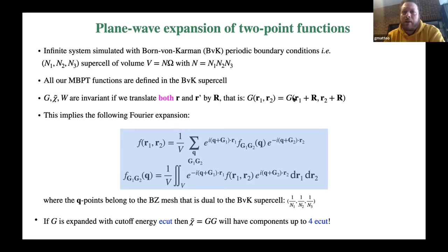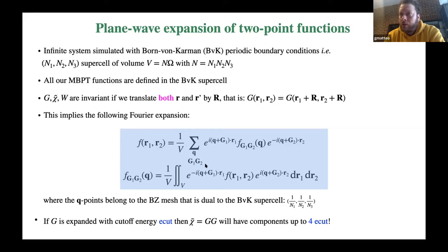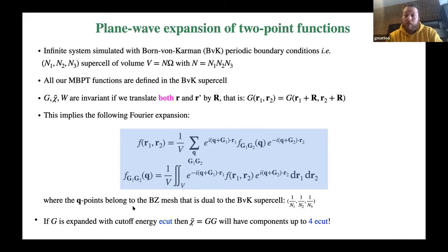Since we are dealing with an infinite system, all our two-point functions are invariant if we translate both spatial arguments. From the mathematical point of view, this leads to a Fourier expansion where, when we expand a two-point function in Fourier space, we have to sum over two plane wave indices g1 and g2. We can define a cutoff energy, and we also have an additional sum over q-points belonging to a mesh inside the first Brillouin zone, which is dual to the Born-von Karman supercell.